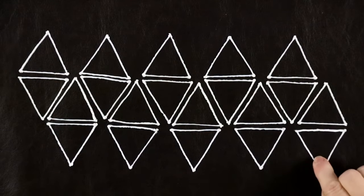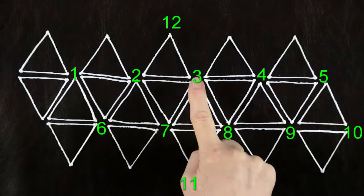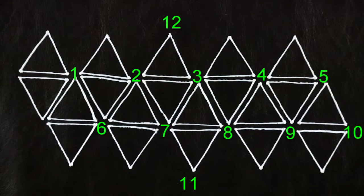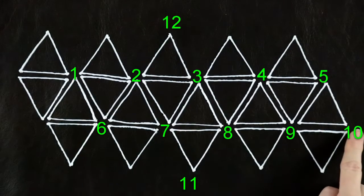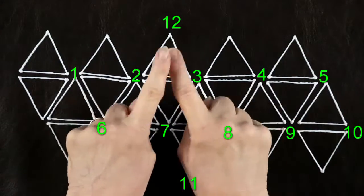Now, icosahedron has 20 faces, which eventually come together in 12 corners or vertices. Like so.